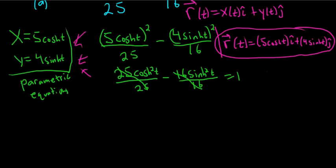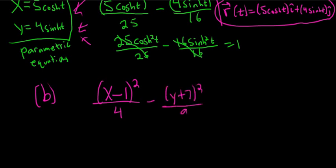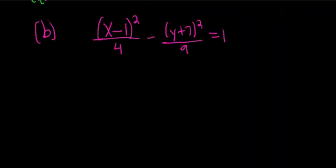Let's do one more. Let's do a harder one just so you see how this works. Say we had x minus 1 squared over 4 minus y plus 7 squared over 9 equal to 1.